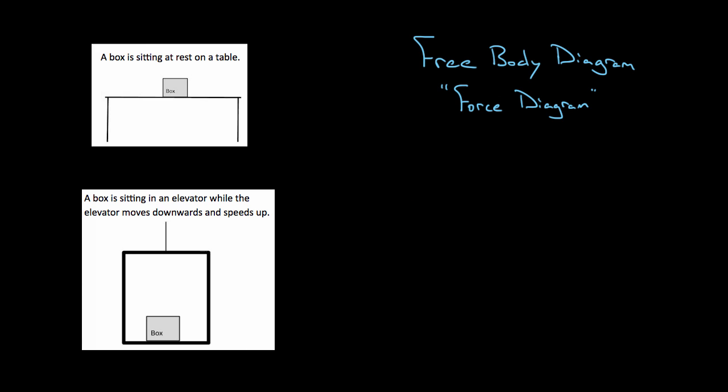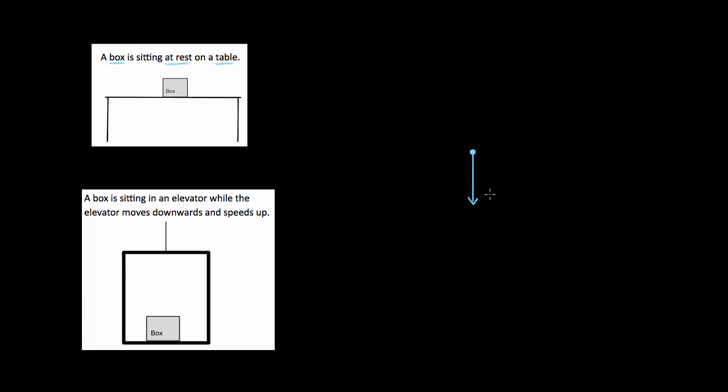How do you draw a free body diagram? First, we draw a dot to represent the object in the problem. Let's say this dot represents a box sitting at rest on a table. Most people know there's a downward force of gravity — if you're near Earth, it pulls you toward the center of the Earth. But that can't be it. If that were the only force, this box would be accelerating downward. Since it's sitting at rest, the forces have to be balanced because there's no acceleration.